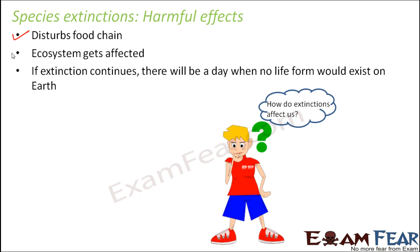The food chain describes how different organisms are dependent on others to obtain their food. For example, animals like cows and goats directly depend on plants for food, while animals like lions and tigers depend on cows and buffaloes. Organisms depend on each other for food in this way.